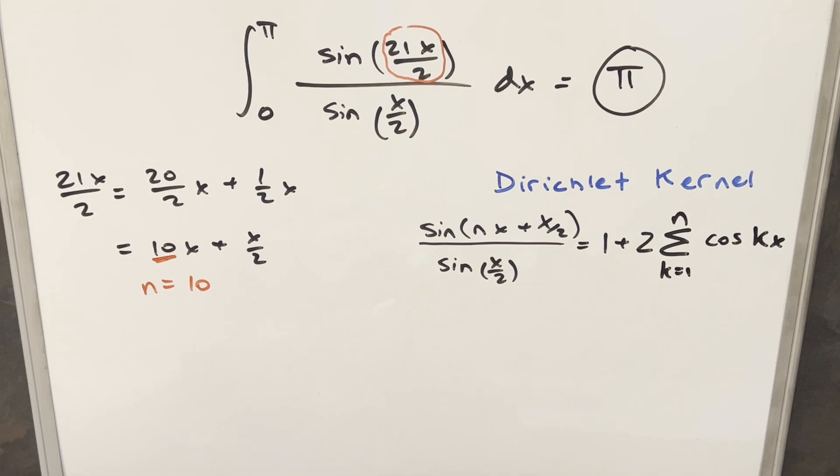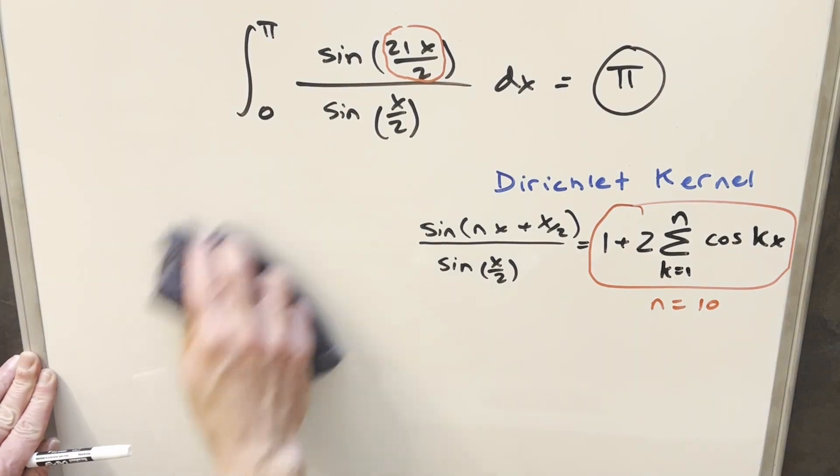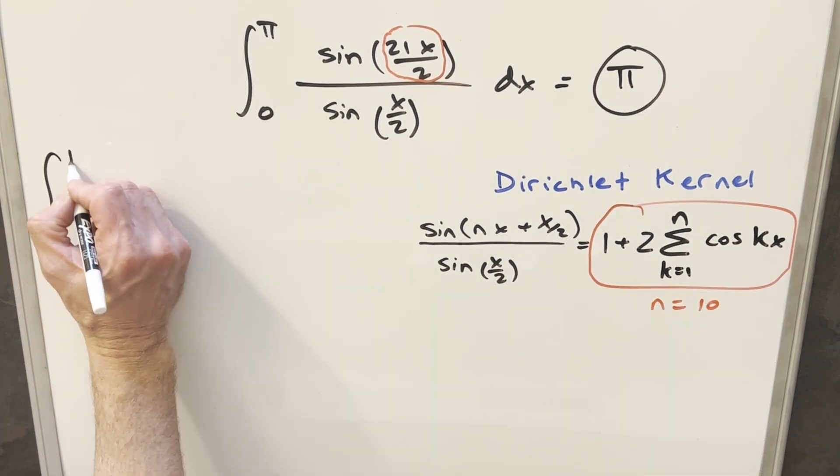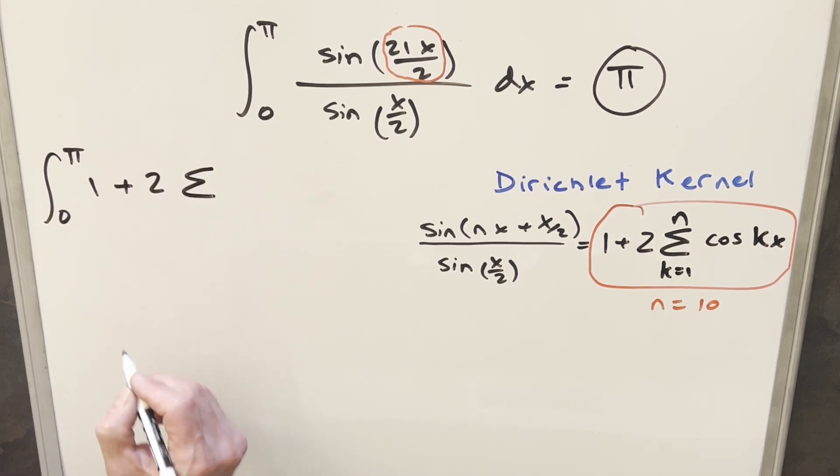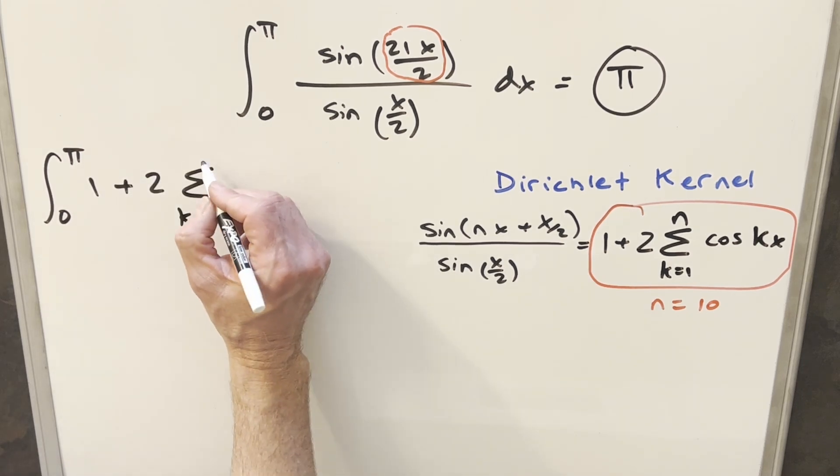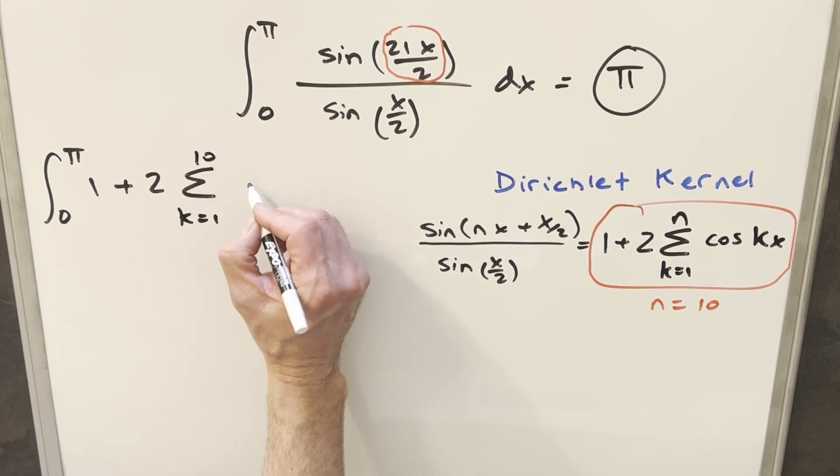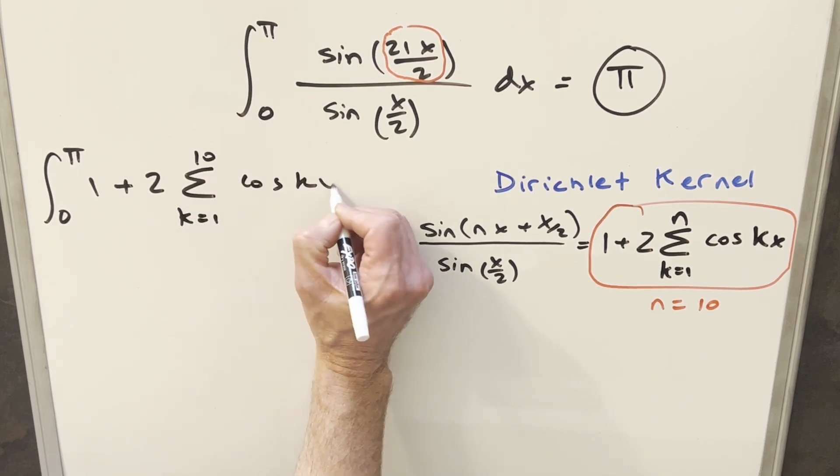Now because our integral is in exactly this form, we can rewrite it like this, just using that n value of 10. So we'll come over here and rewrite it. We'll have our integral from 0 to pi, and then using this, it's going to become 1 plus 2 times the sum. We'll have this sum starting at 1, going to n, which is 10, and it's just going to be cosine kx dx.